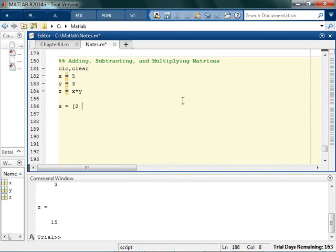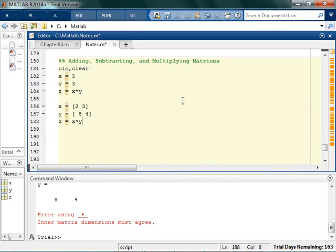So if I say x is equal to [2, 3] and y is equal to [8, 4], and I try to multiply them, it gets mad at me. Do you know why it gets mad at you?